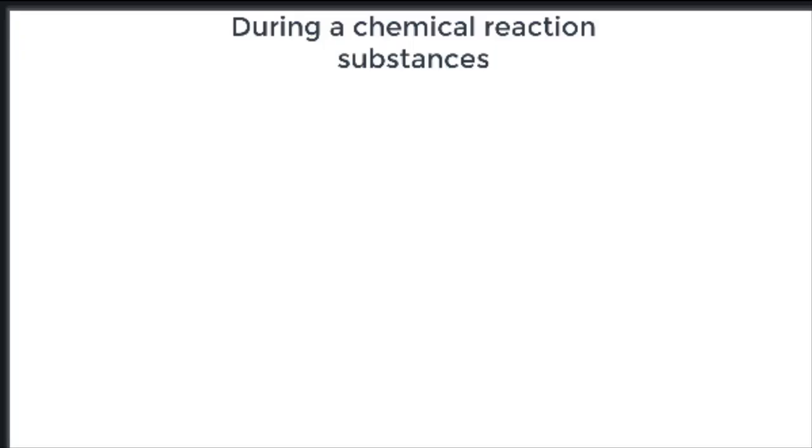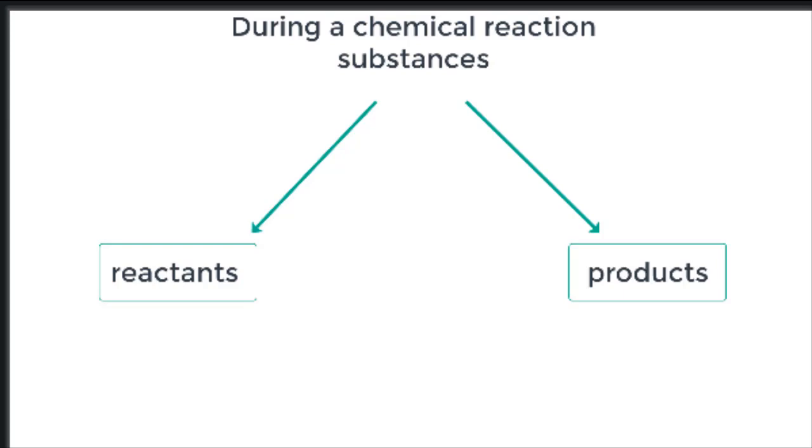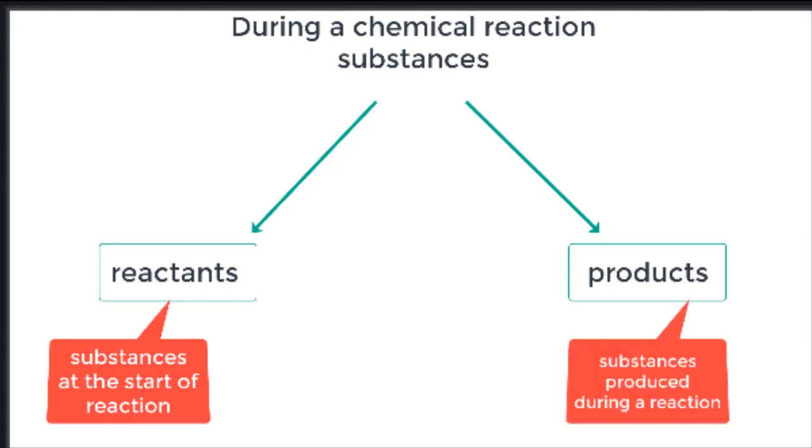As a conclusion, during a chemical reaction, substances are classified into reactants and products. Reactants are the substances that are at the start of the reaction, and the products are the substances produced during a reaction.